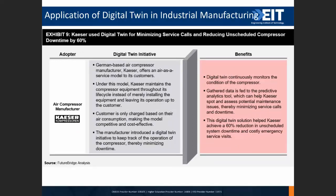Kaeser makes air compressors. They put compressors at client sites and told customers: you don't need to purchase or maintain the compressor — just pay for how many cubic meters of air you consume. Meanwhile, Kaeser fed all compressor data back to their digital model. This helped Kaeser achieve a 60% reduction in unscheduled system downtime and associated costs.